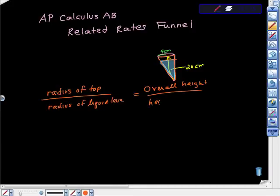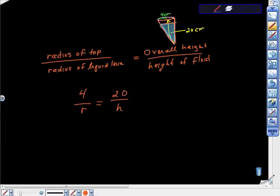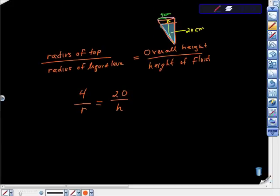So height of fluid, I guess, liquid, fluid, whatever. So I'm going to fill in the stuff I know. The radius of the top is 4. The radius of the liquid is what I'm not sure of. The overall height is 20, isn't it? And the height of the fluid is also unknown. So from here, it gets a little bit confusing because I'm looking at it and I'm like, okay, where am I going to go with this?